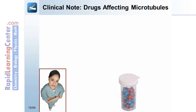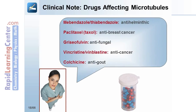Microtubule dynamics can be altered by drugs, including mebendazole or thiabendazole, which are anti-helminthic; paclitaxel, also known as taxol, which is anti-breast cancer; griseofulvin, which is anti-fungal; vincristine and vinblastine, which are anti-cancer; and colchicine, which is anti-gout.